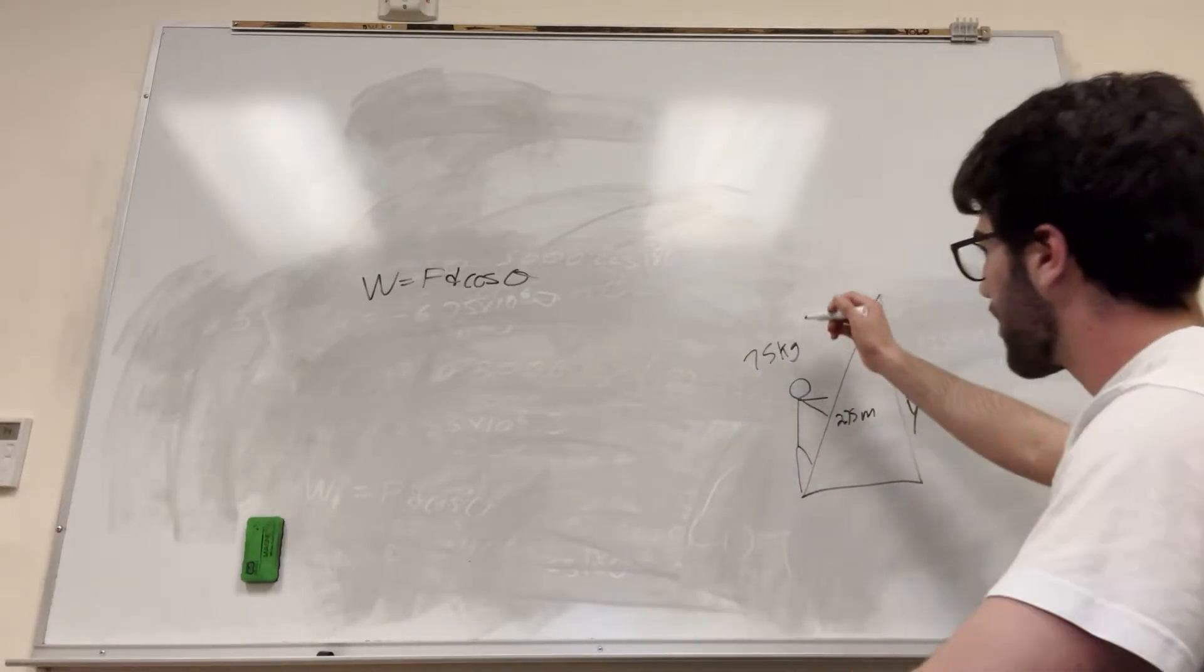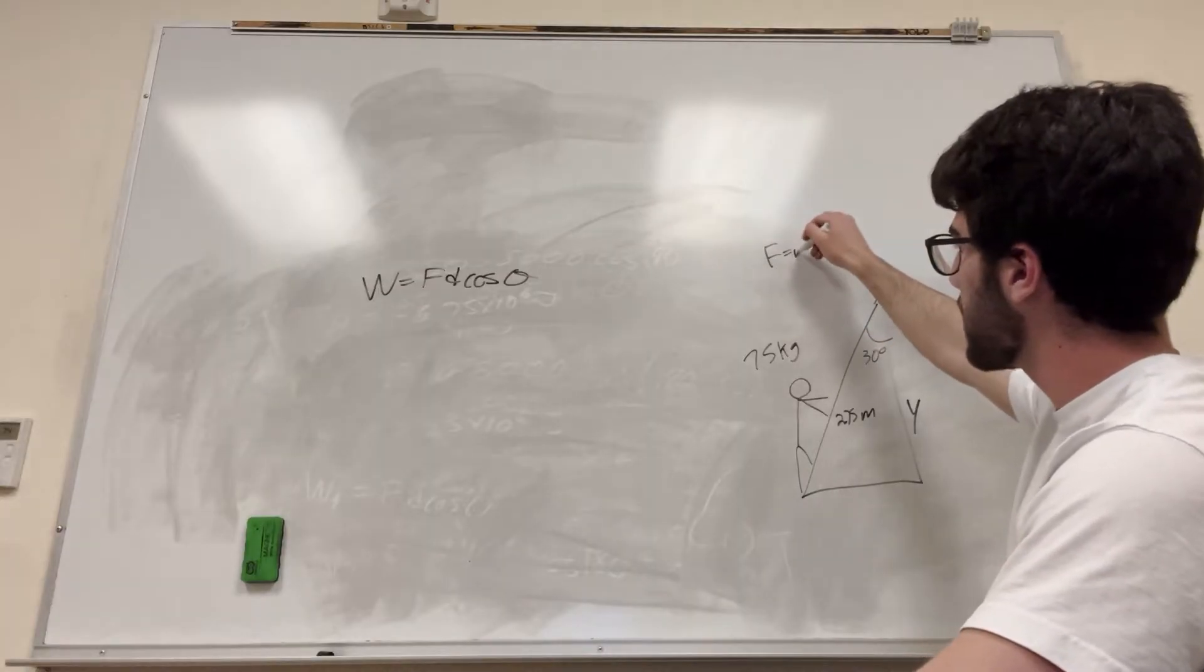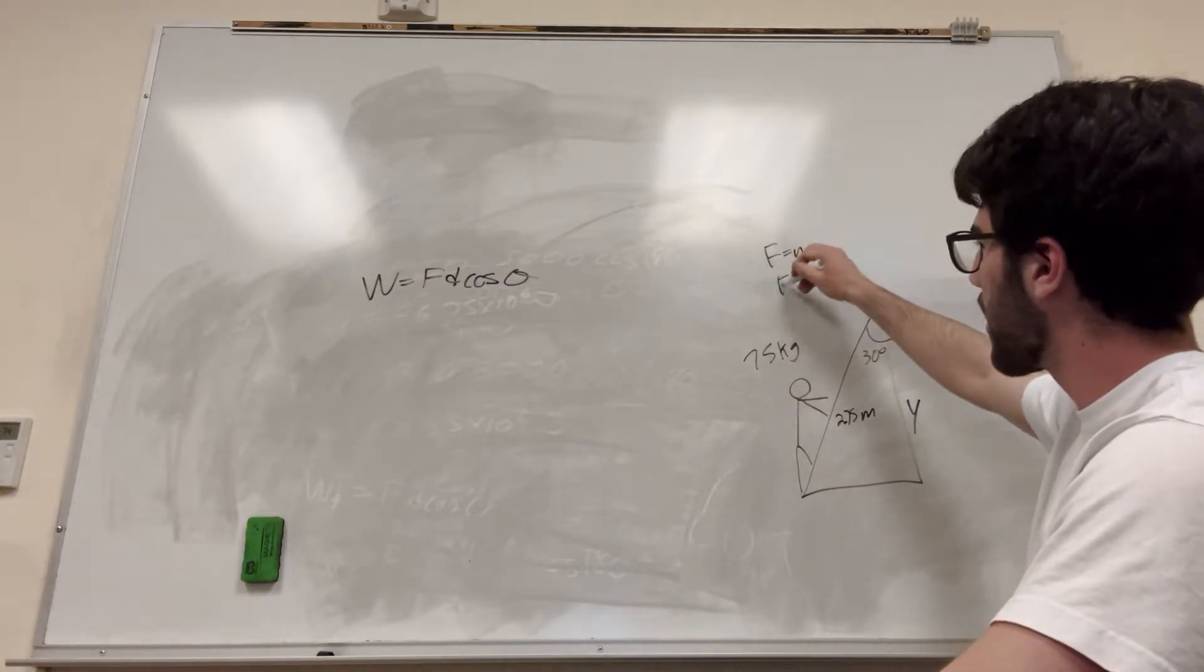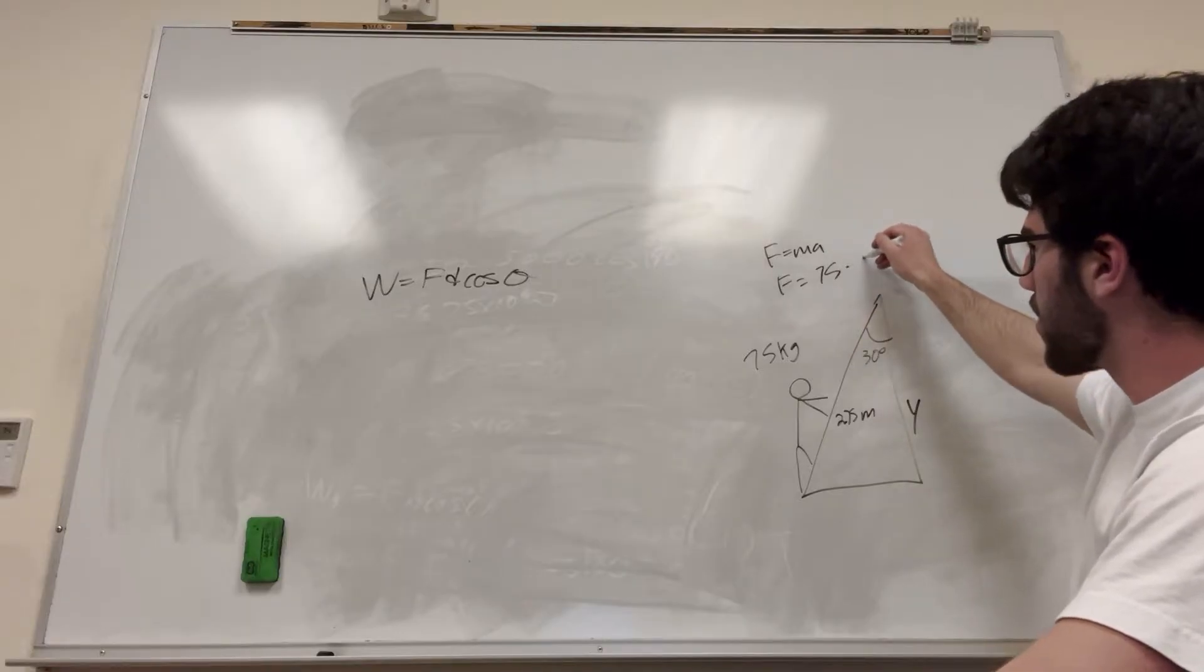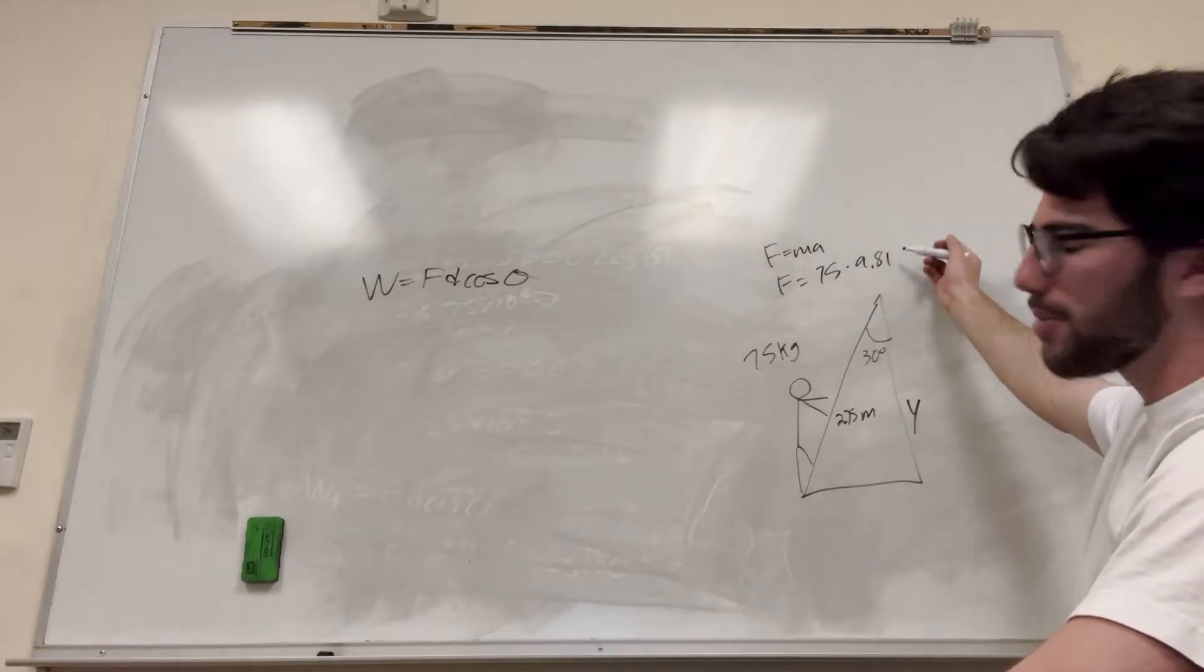So let's go ahead and figure out a couple things. So let's find this force, first of all. Okay, so force is equal to mass times acceleration. His mass is 75 kilograms, and acceleration on Earth is 9.81 meters per second squared by gravity.